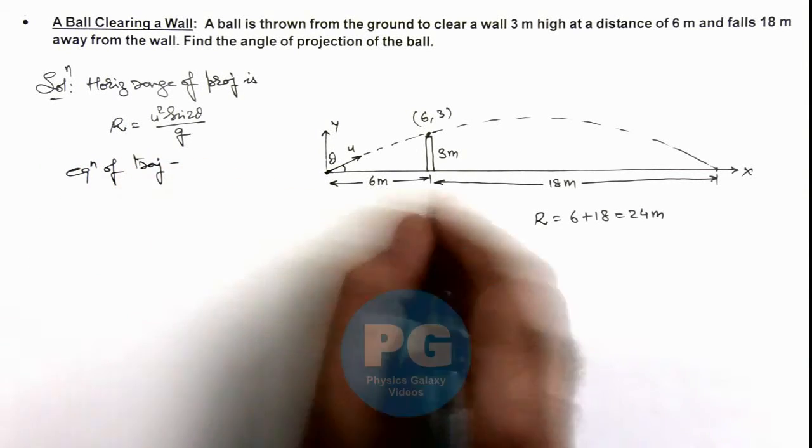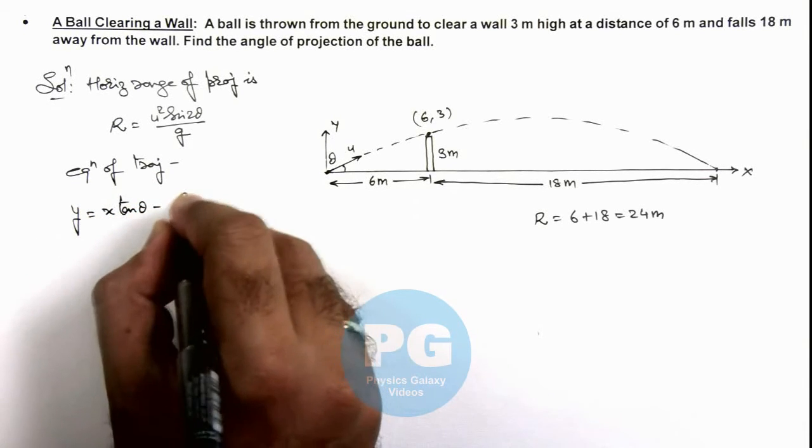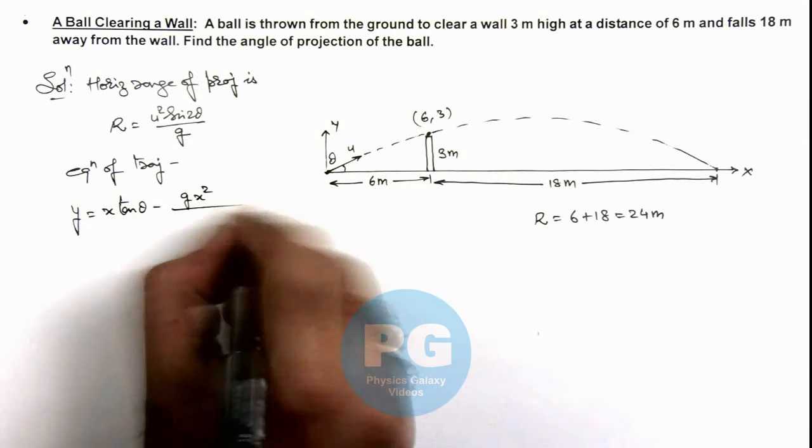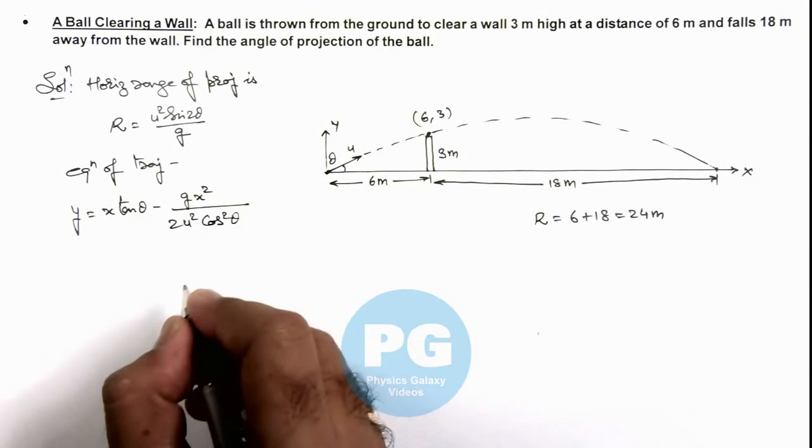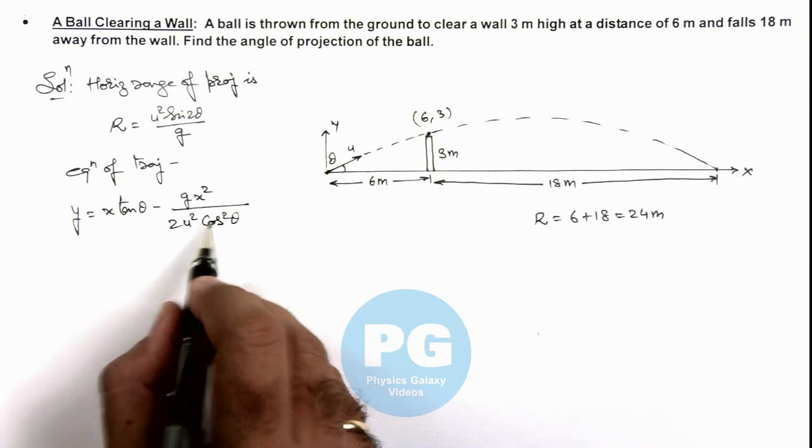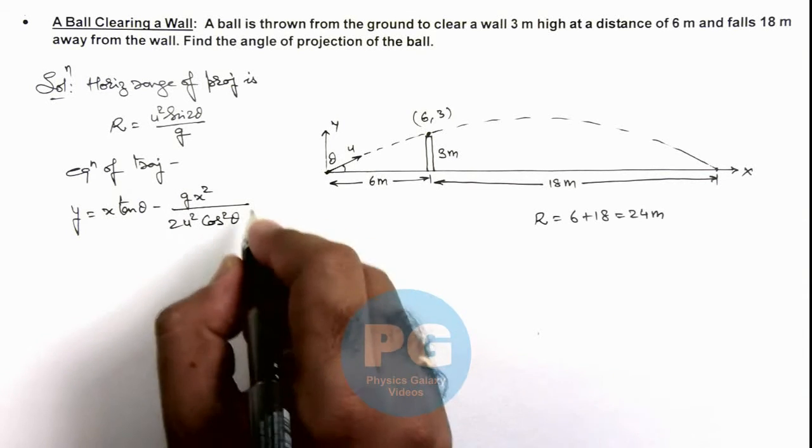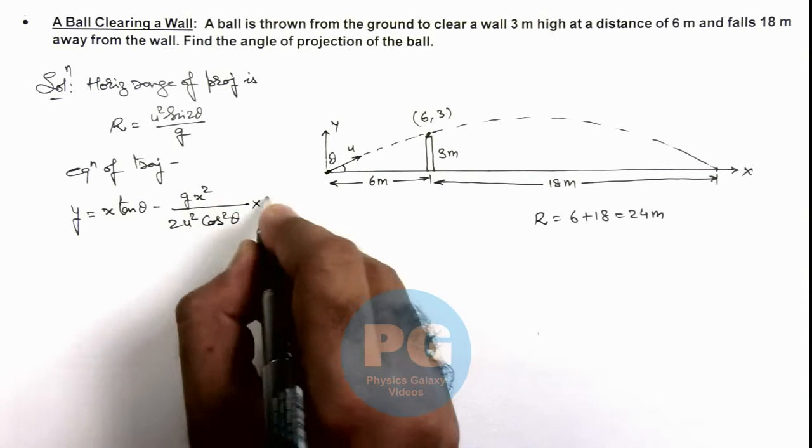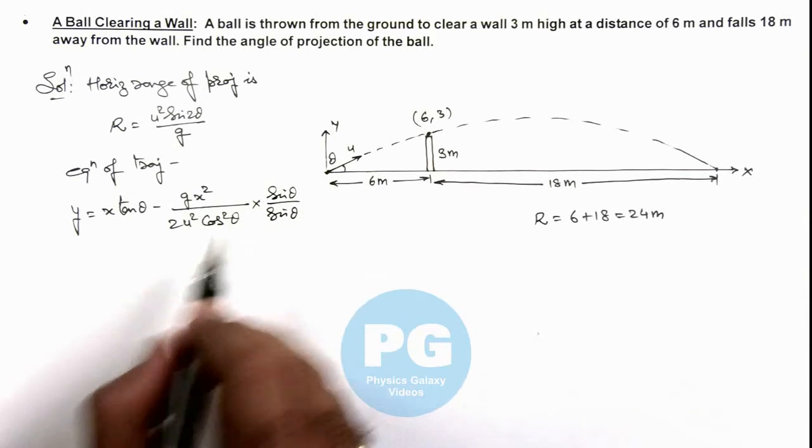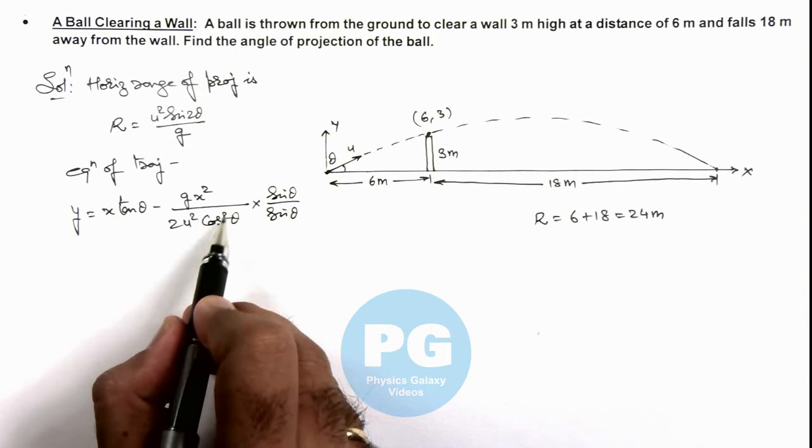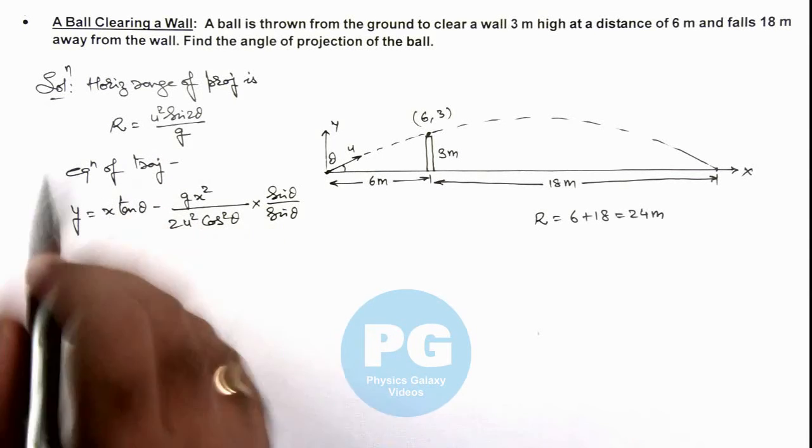Of this projectile is given as y equals x tan theta minus g x squared by 2 u squared cos squared theta. Here if we just substitute the value of u squared by g in terms of R, we can multiply this second term by sine theta upon sine theta. Then this cos squared theta, one cos theta, and this sine theta will be tan theta and remaining parameters can be replaced by R.